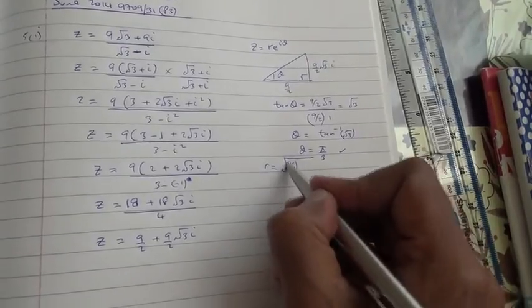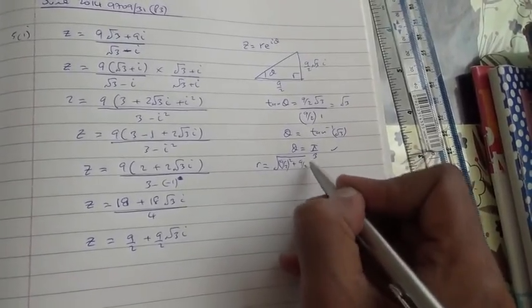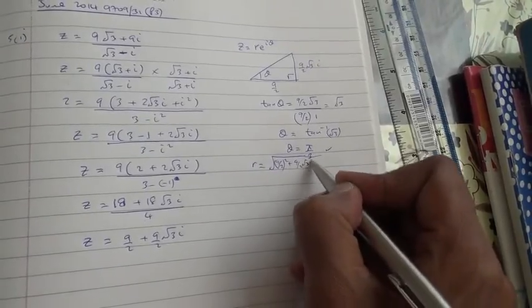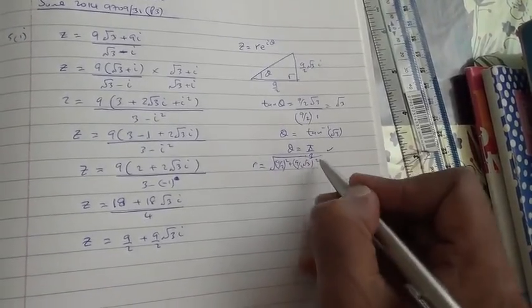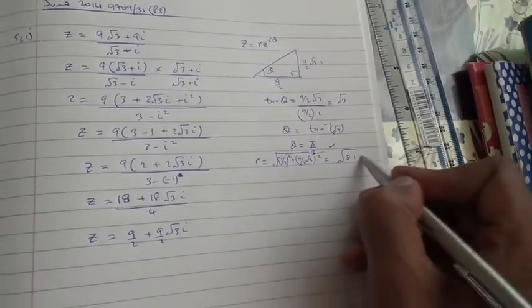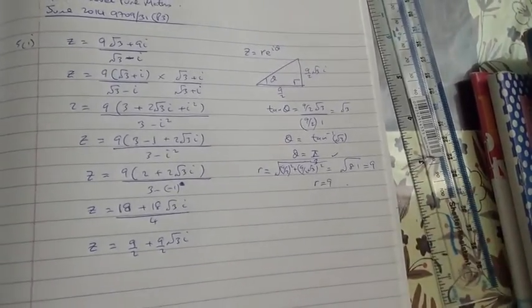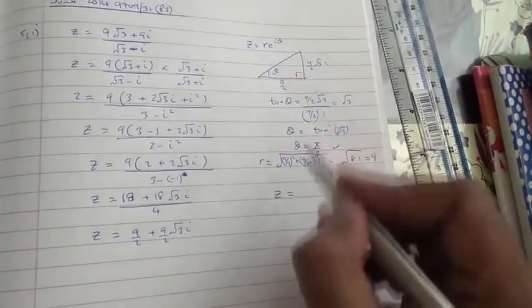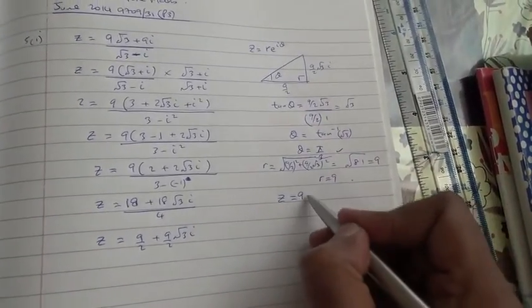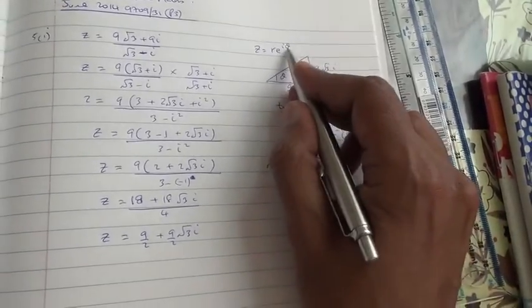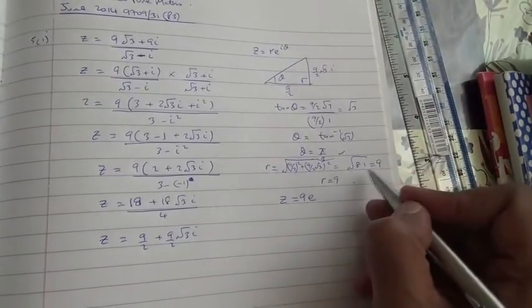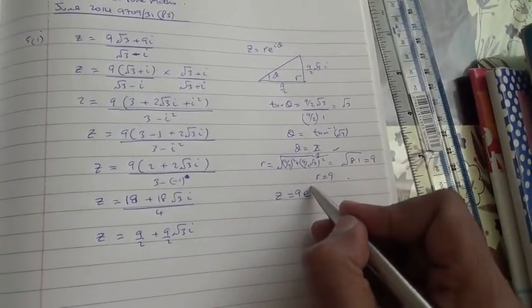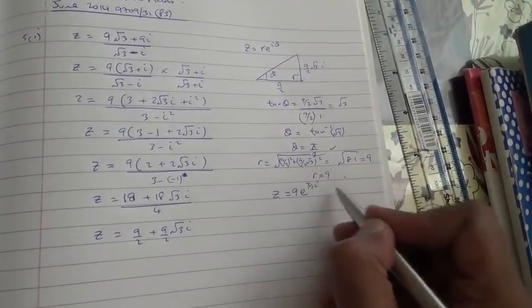So 9 upon 2 to the square plus 9 upon 2√3 to the square. Work that in the calculator, you come to root of 81, which is 9, therefore r equals 9. Hence, the answer should be z equals r, which is 9, e to the power of iθ, and the argument is π upon 3. So π upon 3i, and here's your answer.